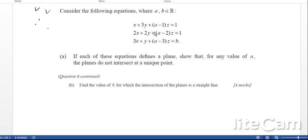Okay, so next let's look at how to solve this kind of thing here. We've got three equations with x, y, and z, and we've also got an a as well. For each of these equations, define a plane. Show that for any value of a, the planes do not intersect at a unique point.